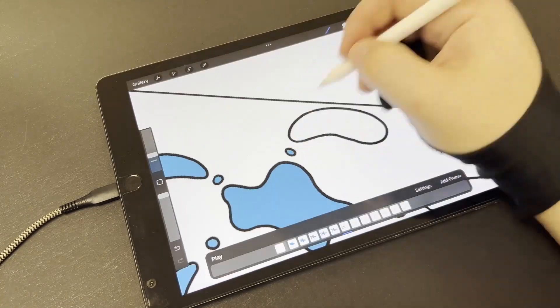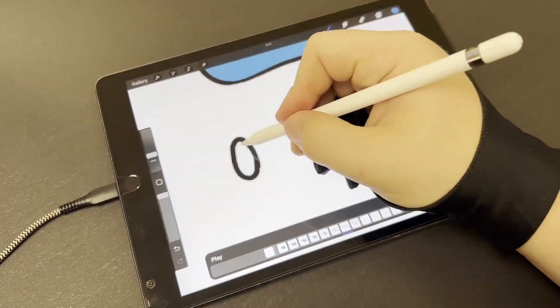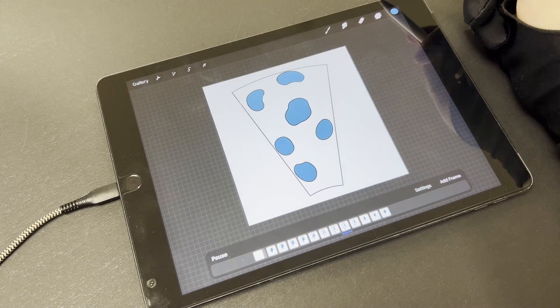Since our disc has 12 slots, the animation needs to be 12 frames. Small details tend to get lost in the phenakistoscope, so bigger, more dramatic movements work best.